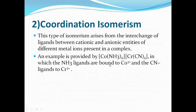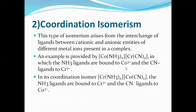When exchange of ligands takes place — amine goes to chromium and cyanide goes to cobalt — that means interchange of ligands with the central metal atoms occurs, giving coordination isomerism. In the isomer, chromium is linked with amine and cobalt is linked with cyanide. These two complexes are called coordination isomers, and the phenomenon is coordination isomerism.